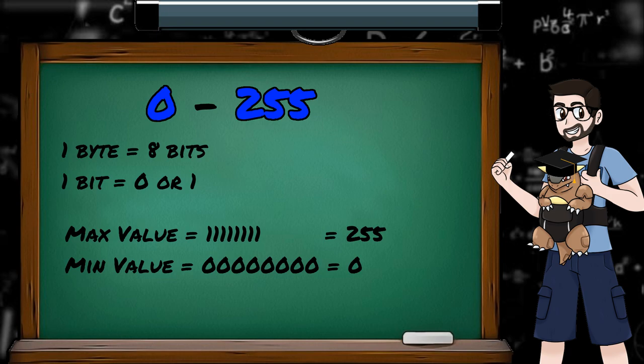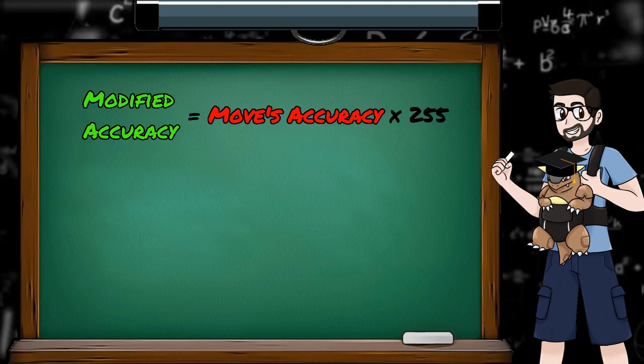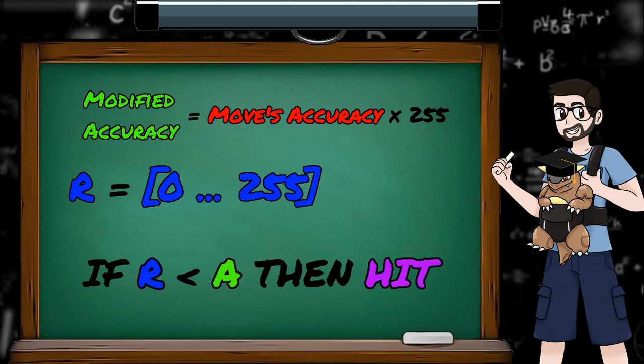A move's accuracy is a number between 0 and 100, because that's human readable. If we're told something is 90% accurate, we understand that 9 times out of 10 it should hit. Now we need to scale that up to our 0 to 255 range. So basically we just need to multiply our accuracy percentage by 255. We then produce a random number between 0 and 255, and if that number is less than our modified accuracy value, then the move hits. Easy as that.